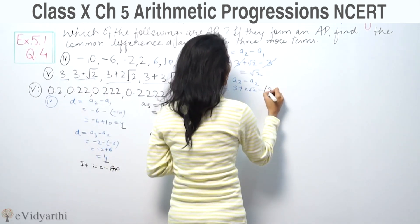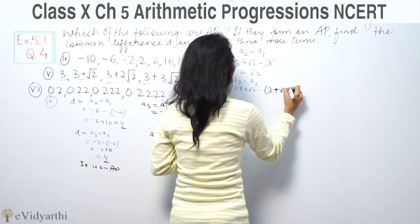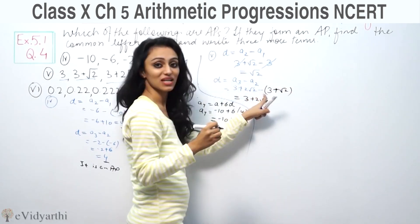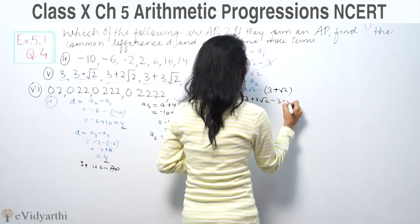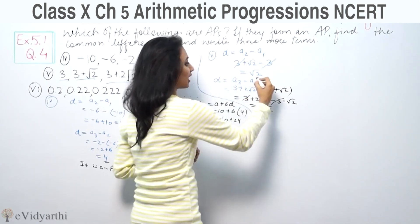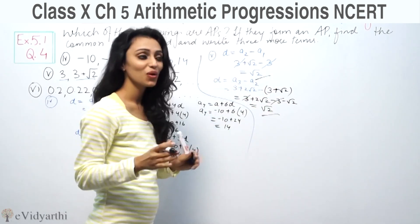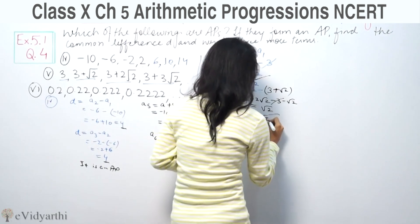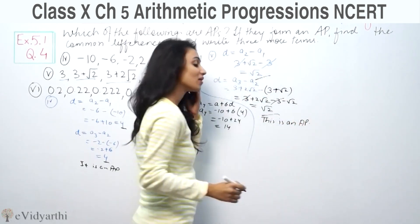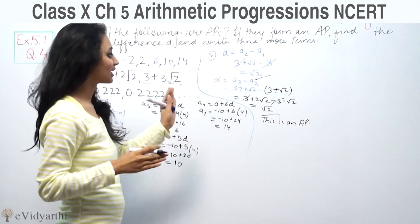So (3 + 2√2) minus (3 + √2) equals 3 plus 2 root 2 minus 3 minus root 2 equals 2 root 2 minus root 2 equals root 2. The common difference is the same, so this is an AP series.